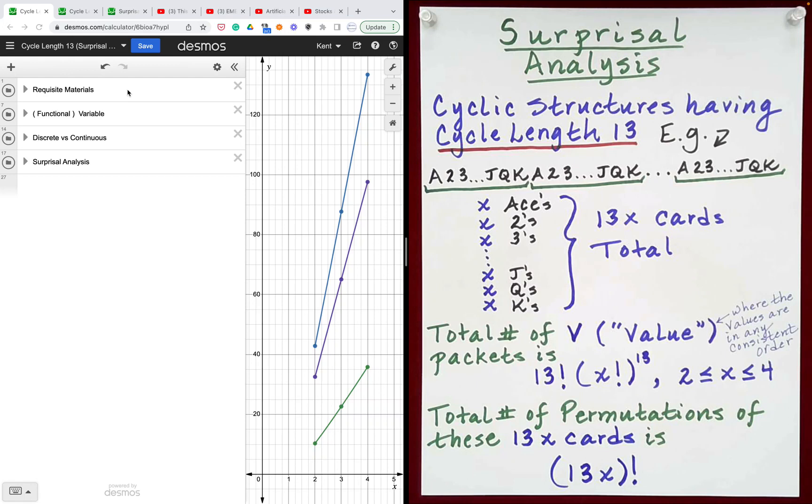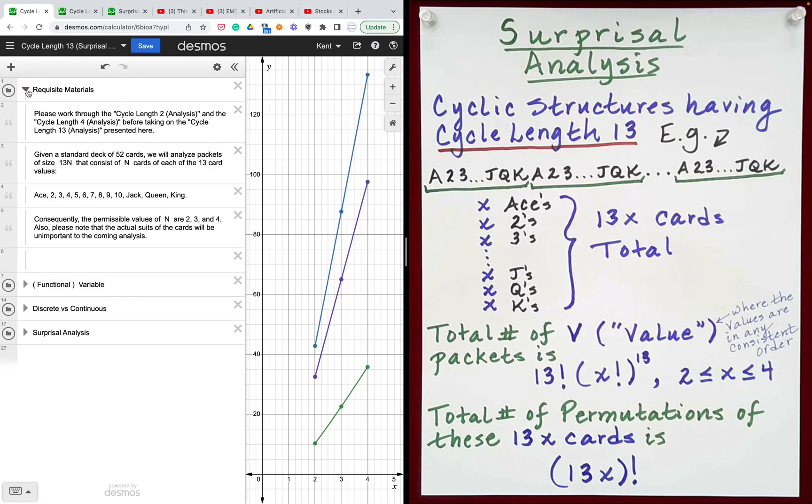Over here in our Desmos activity, let's do a quick review. Given a standard deck of 52 cards, we will analyze packets of size 13n that consist of n cards of each of the 13 card values, ace through king.